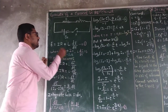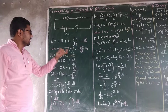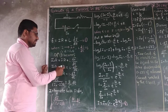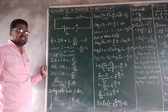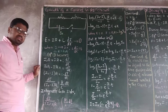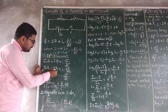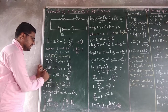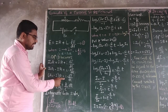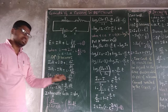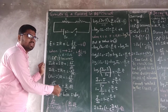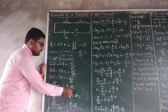Substituting E = I₀R into equation 1: I₀R = IR + L(dI/dt). Taking IR to the left-hand side: I₀R - IR = L(dI/dt). Since R is common to both terms, this gives R(I₀ - I) = L(dI/dt).